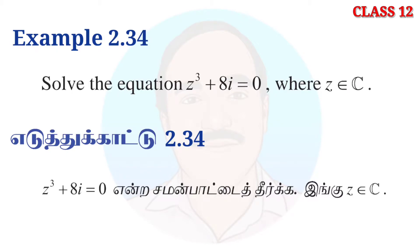Solve the equation Z cube plus 8i equal to 0, where Z belongs to complex numbers. That's why Z cube plus 8i equal to 0.